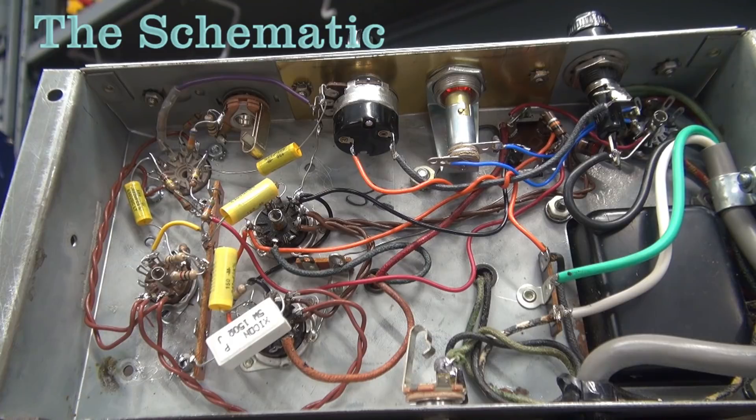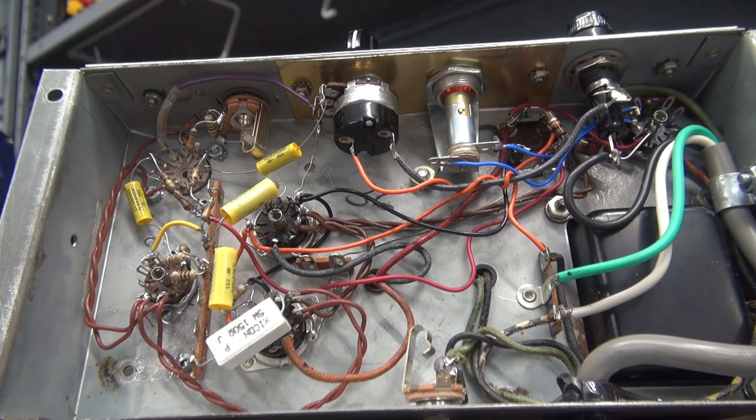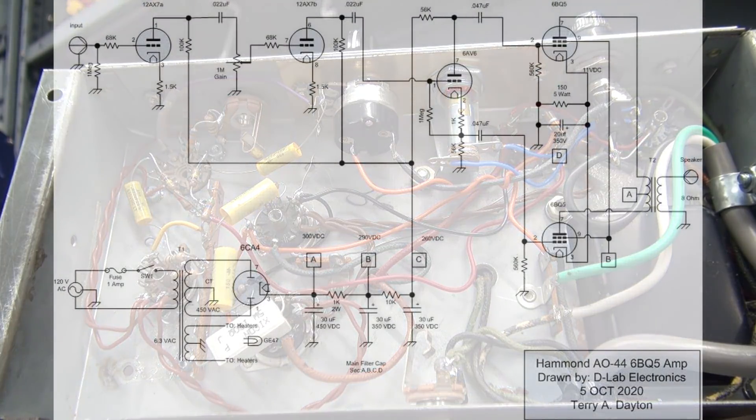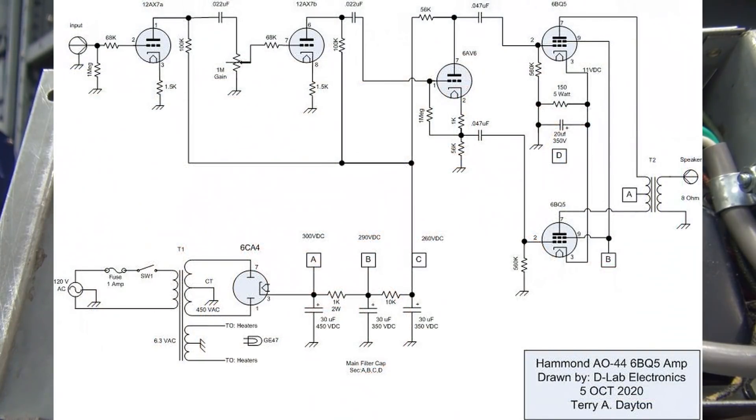Well, here it is. As promised, the schematic. So you can convert your Hammond AO44 amplifier into a Class AB 6BQ5 amp for guitar use. Now, if you take a look at the schematic, you can see this thing is really straightforward.